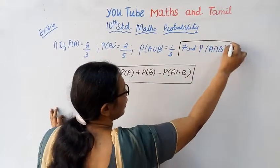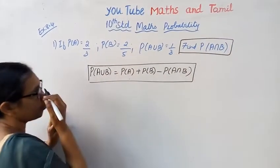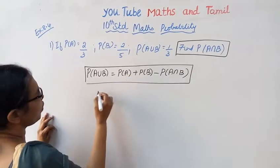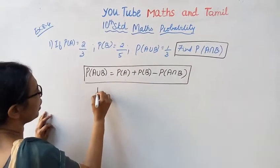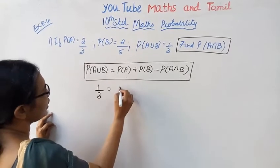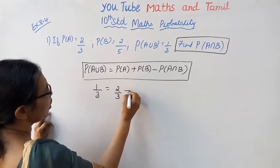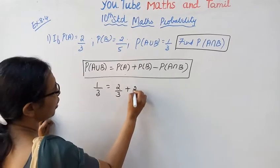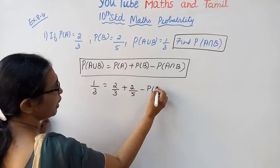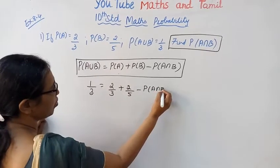P of A union B equal to 1 by 3, P of A equal to 2 by 3, P of B equal to 2 by 5, minus P of A intersection B.